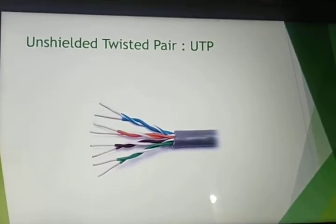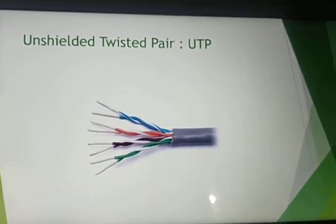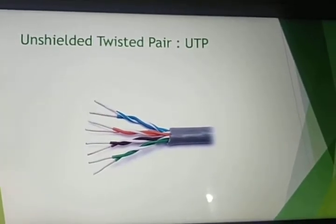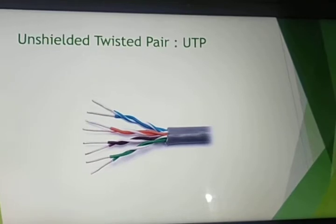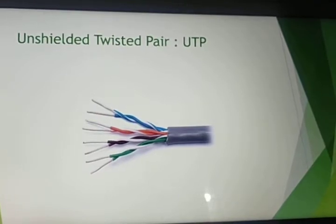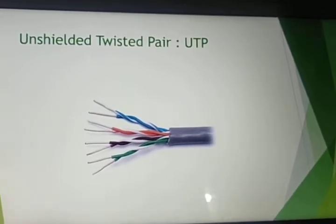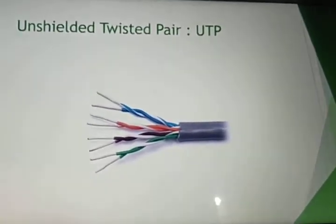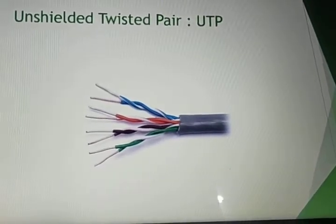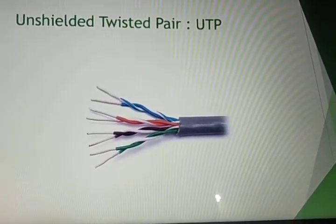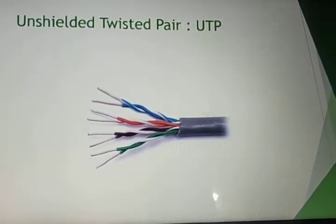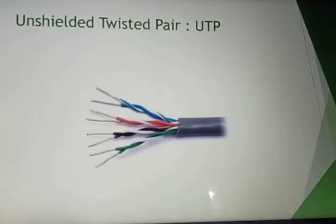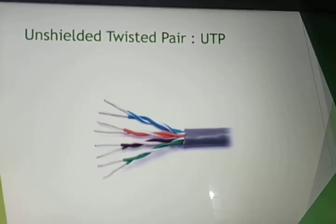Next, we have unshielded twisted pair, also known as UTP, which is less expensive than STP. It does not have a covering or coating to protect itself. So this is UTP.